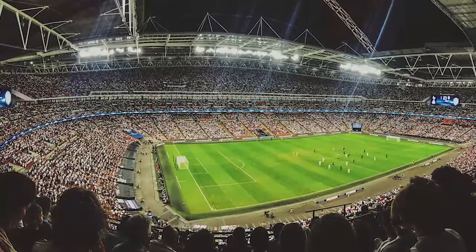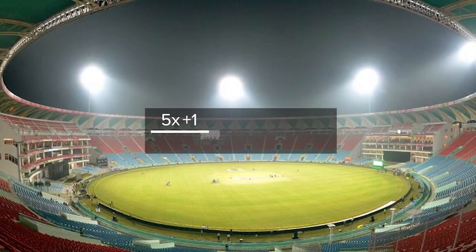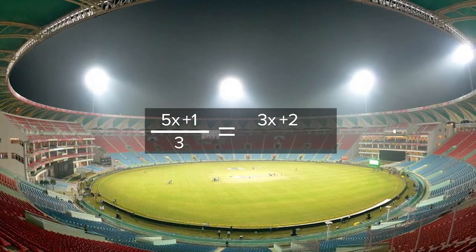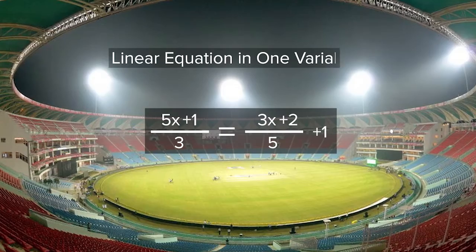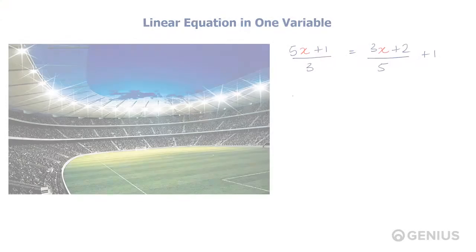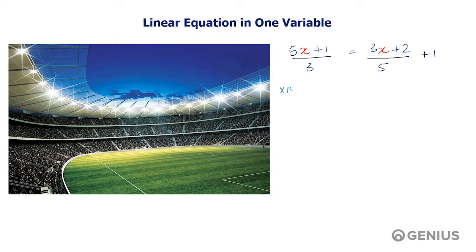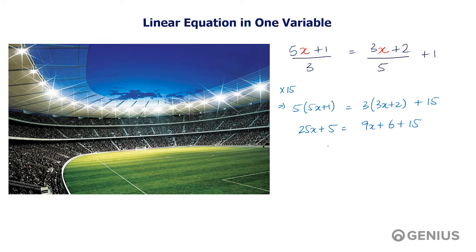Now, if we have something like (5x + 1) / 3 = (3x + 2) / 5 + 1 — this is also an example of a linear equation in one variable. To solve it, we multiply both sides by 15 to get 5(5x + 1) = 3(3x + 2) + 15. So 25x + 5 = 9x + 6 + 15. Then 25x minus 9x = 6 + 15 minus 5, giving us 16x = 16, or x = 1.